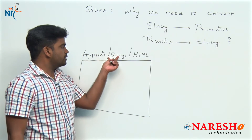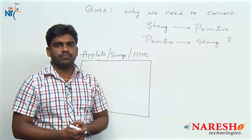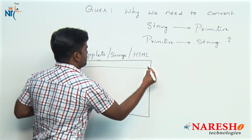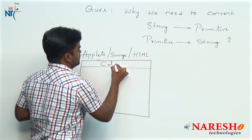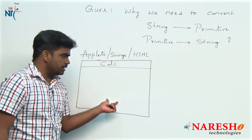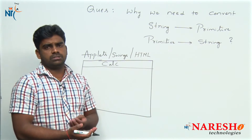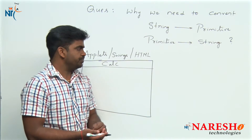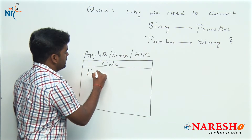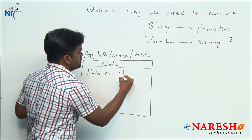Whatever the API or technology we are using, no matter, here is the frame — the name is a calc window. I am designing a simple calculator graphical user interface. There is one label: "Enter Number 1".